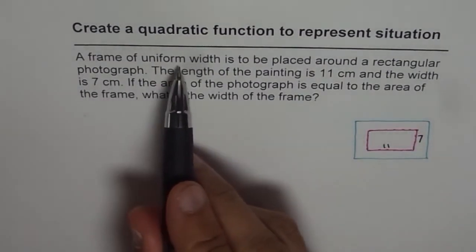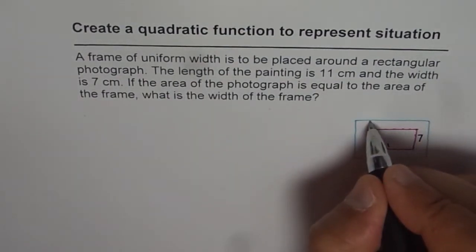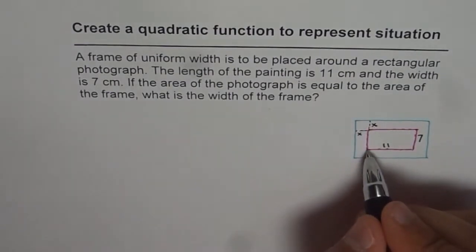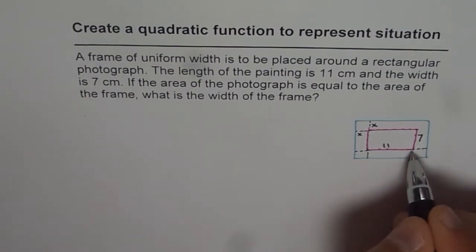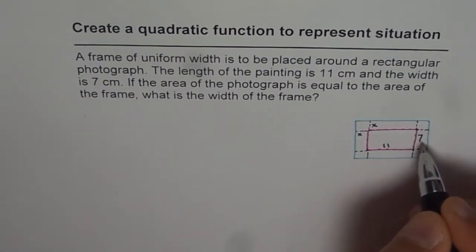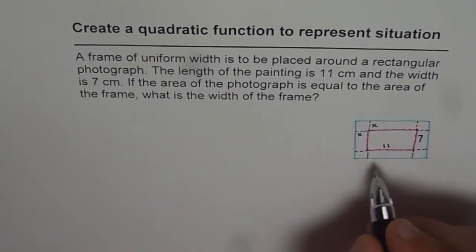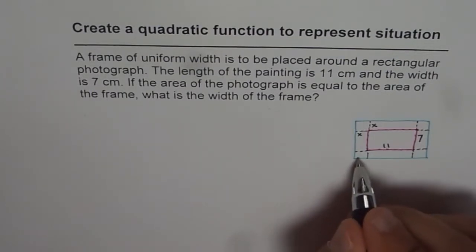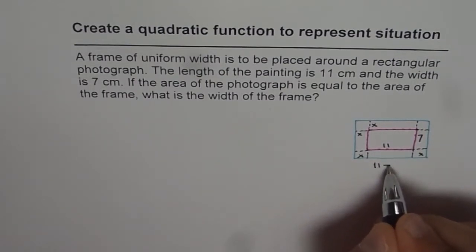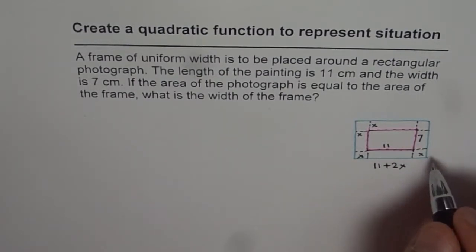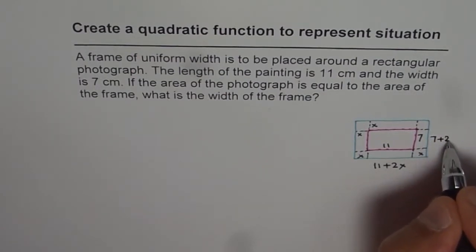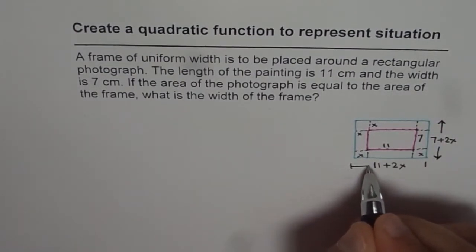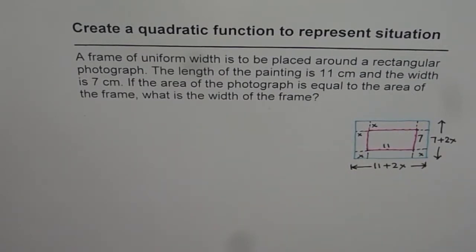The frame has a uniform width, that means x by x on each side. So with the frame, the total length is going to be 11 plus 2x, since we have x here and x there. So it will be 11 plus 2x. And the width is going to be 7 plus 2x. The total length for the frame is going to be 11 plus 2x.